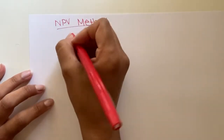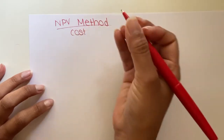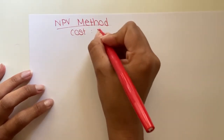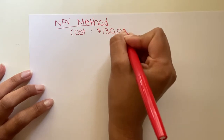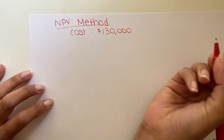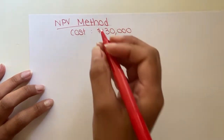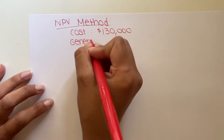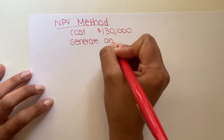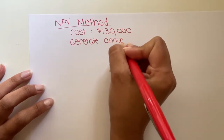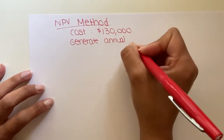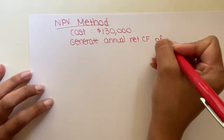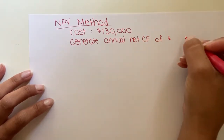So let's say that a company is considering investing in a new piece of equipment. The cost of that new piece of equipment is $130,000. It's going to generate annual net cash flows of $24,000.